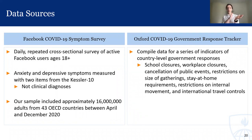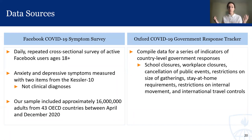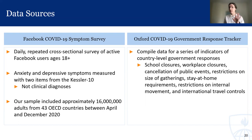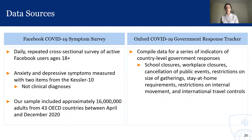We took this symptom survey data and linked it based on country and time to the Oxford COVID-19 government response tracker. This source of data compiles data for a series of indicators of country-level government responses. They capture a number of different non-pharmaceutical interventions that we looked at in our study. These include school closures, workplace closures, cancellation of public events, restrictions on the size of gatherings, stay-at-home requirements, restrictions on internal movement, and international travel controls — a wide range of different government responses.